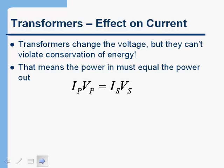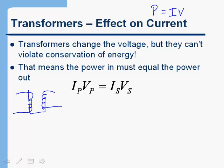Power in an electrical circuit is just current times voltage. So the current in the primary coil times the voltage in the primary has to equal the current in the secondary times the voltage in the secondary. When the voltage in the secondary goes up, correspondingly the current in the secondary has to go down so that the power in equals the power out.